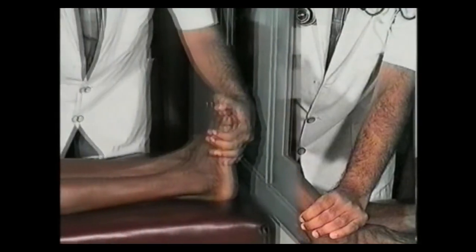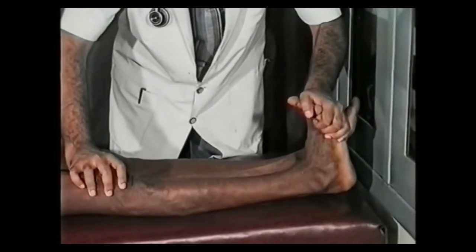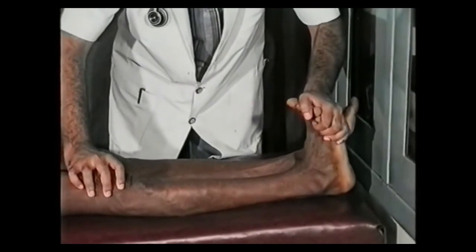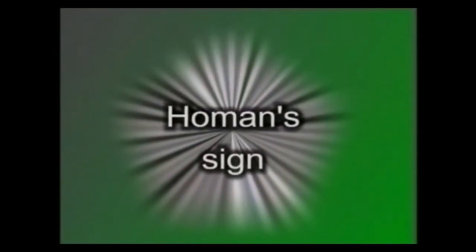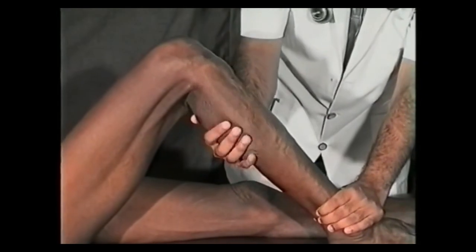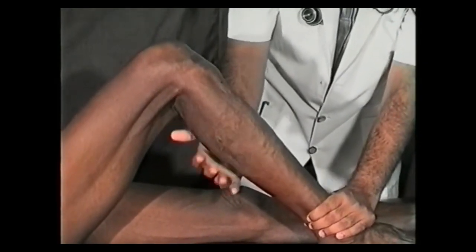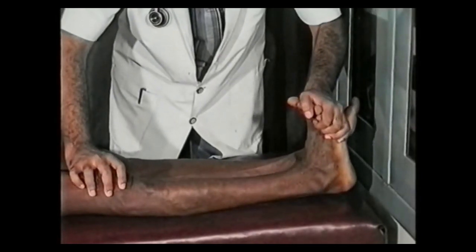Now let the leg rest with the knee fully extended for the Homan sign. Dorsiflex the foot passively. The resultant stretching of the calf muscles and the posterior tibial vein elicits pain if the deep veins are thrombosed. This is a positive Homan sign. In active deep vein thrombosis, all these tests should be performed very gently as they can potentially dislodge a thrombus and cause pulmonary embolism.